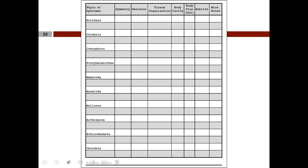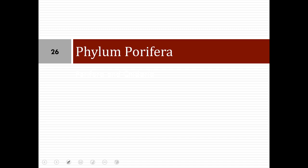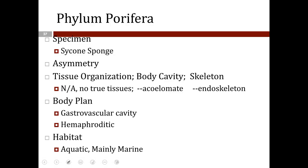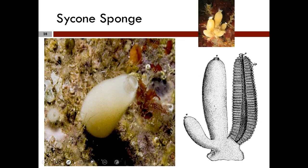Let us begin with Phylum Porifera. The specimen here is the sponge — specifically a cyclone sponge. They are asymmetrical and have no true tissues. As for body cavity, they are acoelomates with no body cavity at all. They have an endoskeleton and a gastrovascular cavity. They are hermaphroditic and live mainly in the marine environment.